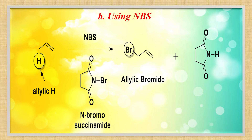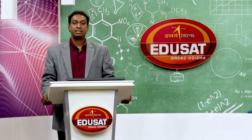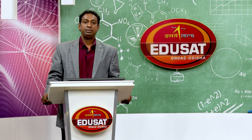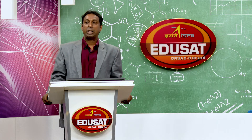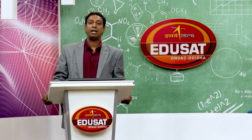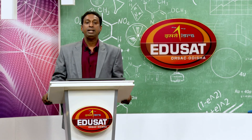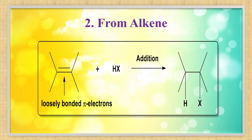The last example of allylic bromination is by using NBS — N-bromosuccinimide. The allylic hydrogen is replaced by bromine, giving allyl bromide.